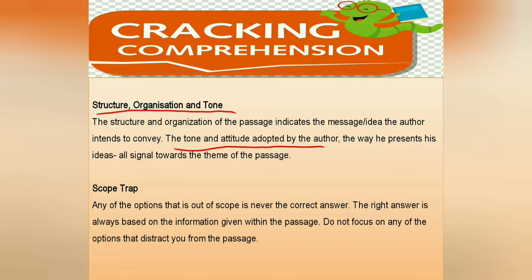There is something called a scope trap. Sometimes in MCQs, some answer options are outside the scope of the passage. For example, if the passage is about unemployment in India and one option talks about unemployment in the world — our passage has nothing to do with unemployment in the world, so that is outside the scope. We need to rule out and reject those answers straight away. We should not fall into this scope trap.